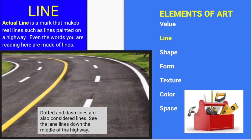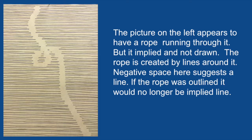You've seen this photo in the previous video. Actual line is a mark that makes a real line, such as lines painted on a highway. Even the words you're reading in a book are made of lines. Dotted and dashed lines are still considered lines. See the lane lines down the middle of the highway? Those were made with a painting instrument. There are also lines that exist in nature. Look at the negative space where there are no lines — it appears to make a rope or string through the picture. That's implied line, not drawn — it's actually negative space, and the rope is created by that negative space with no contour line around it.